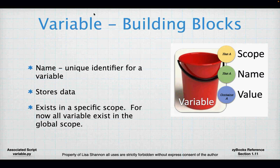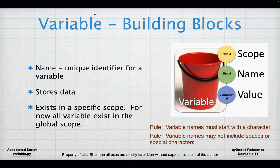You will refer to a variable by its name to get to the value, so you can change the value but the code doesn't change. Variable names have to start with a character and may not include spaces or special characters. They can include an underscore, and they can have numbers in them but can't start with a number.